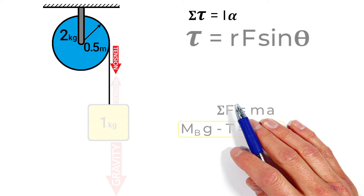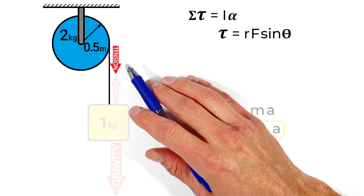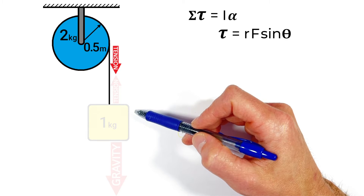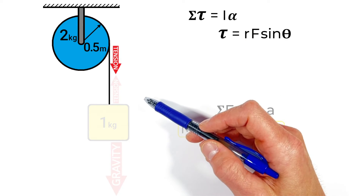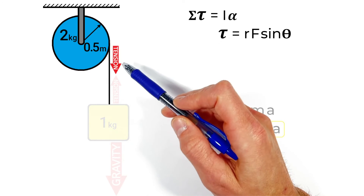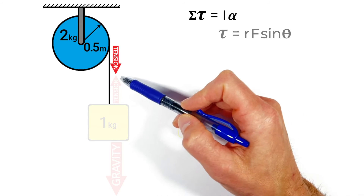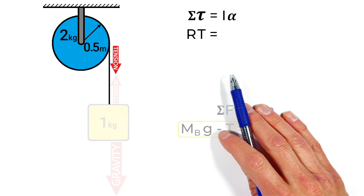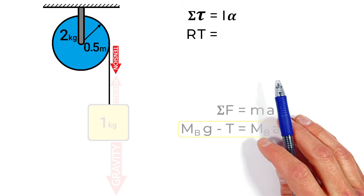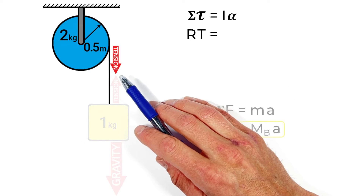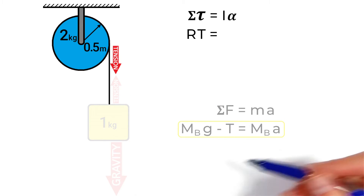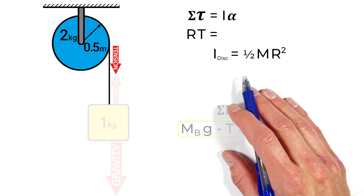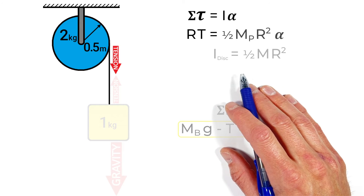Torque is given by the equation R times F times sine theta, where R is the distance from the point of force application to the pivot, F is the applied force, and theta is the angle between the force and the radius vector. Because the string is wrapped around the pulley, the force acts at a right angle to the radius vector, so we're left with just the radius times the tension, set equal to the inertia of the disk times angular acceleration. The inertia of a disk is one-half the disk's mass times its radius squared.